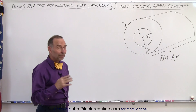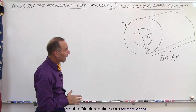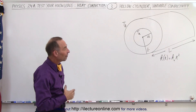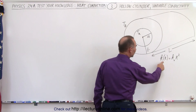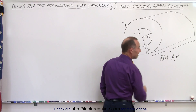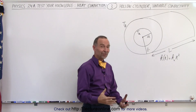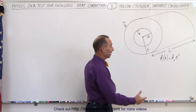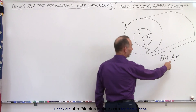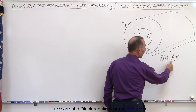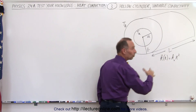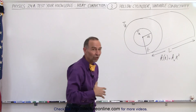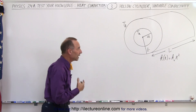This particular cylinder has a variable heat conductivity — it's not really a constant, it varies. It is equal to a constant K-naught times the radius squared, so it does depend on the square of the radius.